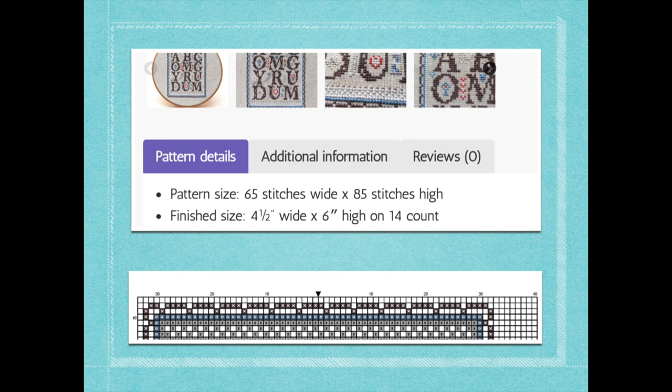However, if you have a pattern that doesn't actually have this information on the pattern itself — it happens for whatever reason, whether it's the software the designer is using — if you look at the actual pattern itself, you can see the grid. My newer patterns have the grid starting at zero in the center where the little black triangle is. It's probably a little small to see in the video, but if you look at the actual printed pattern or the digital version, you can see this much more clearly.